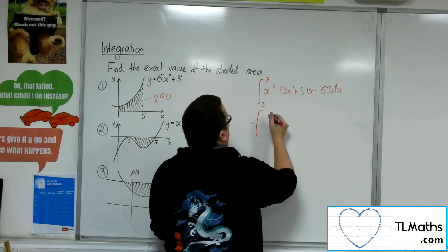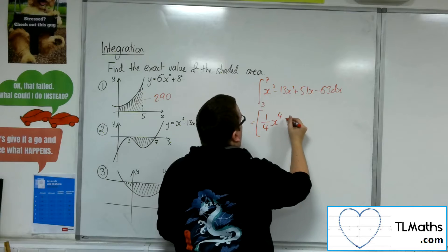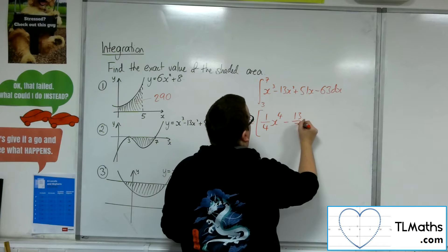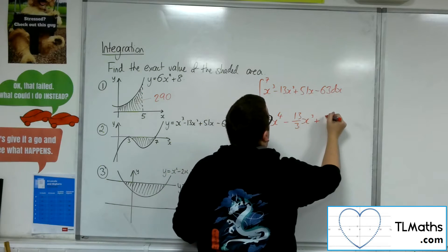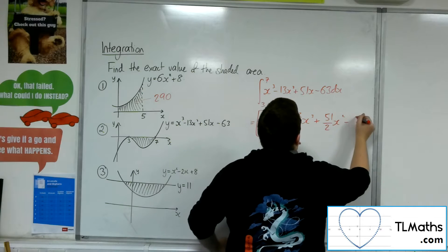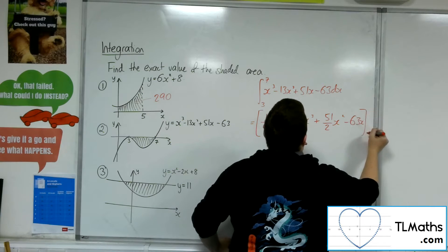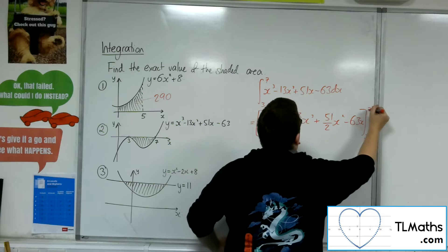So, add 1 to the power, divide by the new power, so 1 quarter x to the 4 minus 13 thirds x cubed plus 51 halves x squared minus 63x, and evaluate that between 3 and 7.